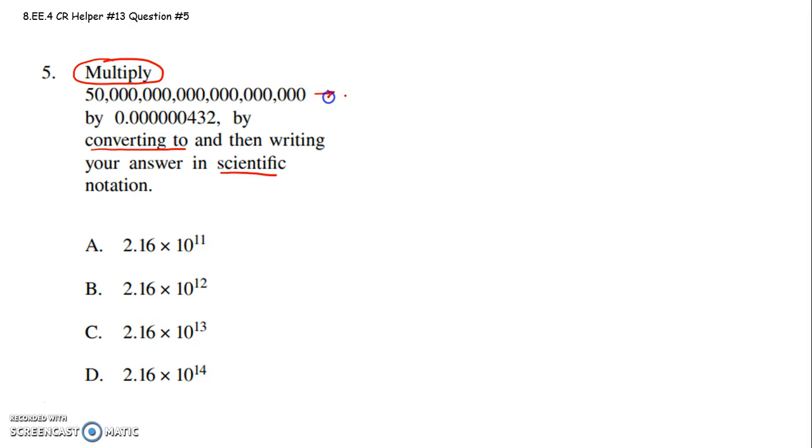I'm going to take this first number and convert that to scientific notation. I know my first factor has to be greater than or equal to 1 and less than 10. So 5.0 would be our first factor. Then you've got to multiply by some power of 10. You have to decide, will that power be a positive or negative? If you're talking about a really big number, the power will be positive.